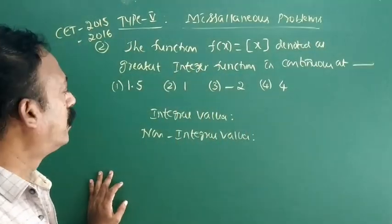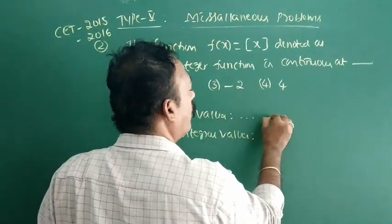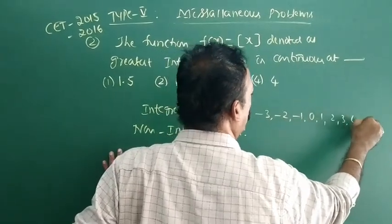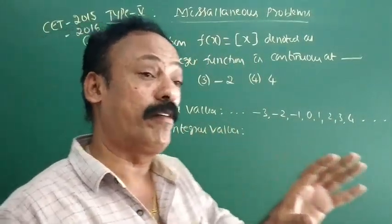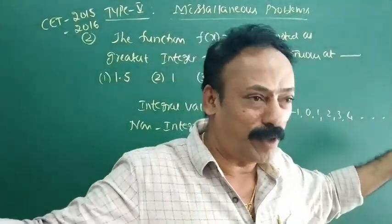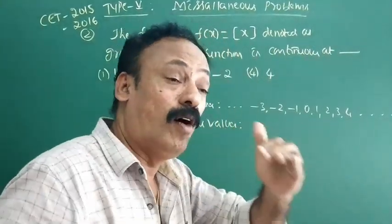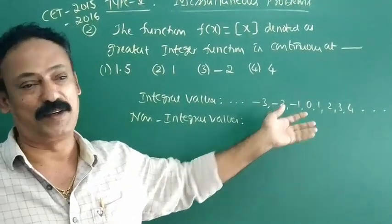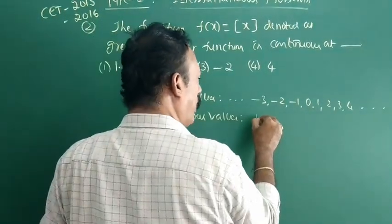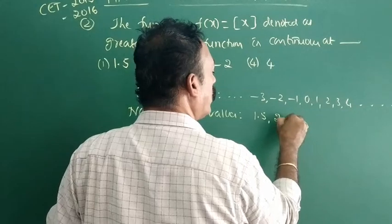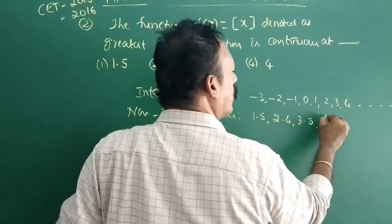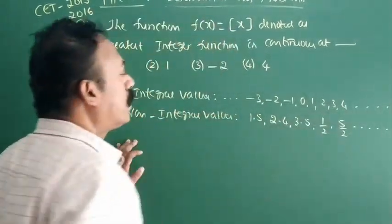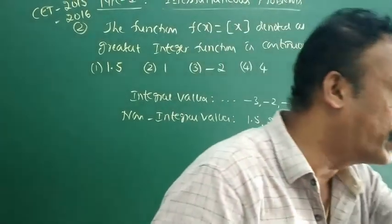Integral values are whole numbers such as minus 3, minus 2, minus 1, 0, 1, 2, 3 and so on. All fractional values belong to non-integral values — for example: 1.5, 2.4, 3.5, 1/2, 5/2 and so on.